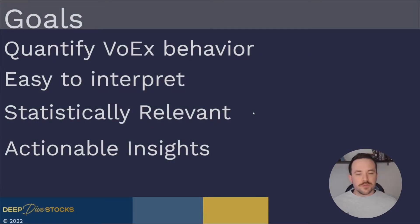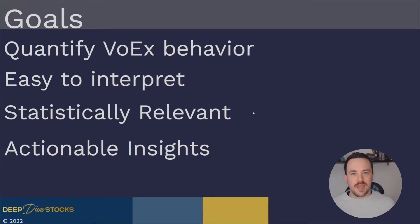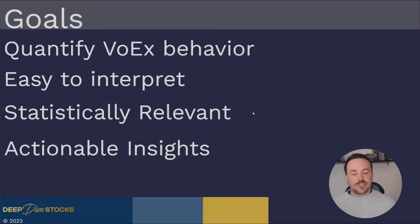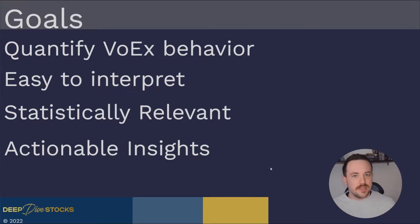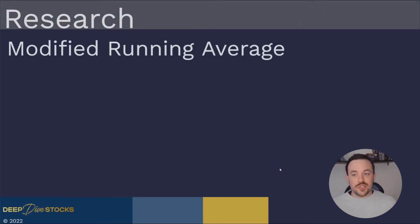The goals of the Snap Graphs were to quantify VOEX's behavior and remove some uncertainty when looking at VOEX — asking, is this VOEX behavior spikish or is this normal? We wanted to quantify that and give actionable and predictive price action from those VOEX behaviors. The Snap Graphs also needed to be easy to interpret, statistically relevant, and provide actionable insights.